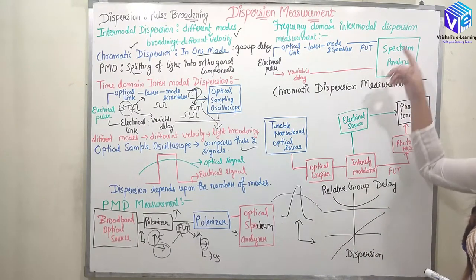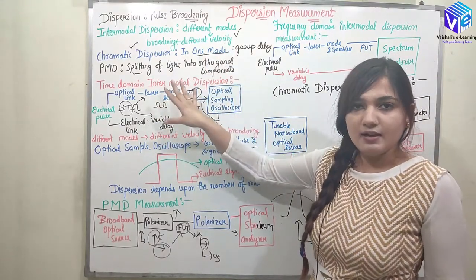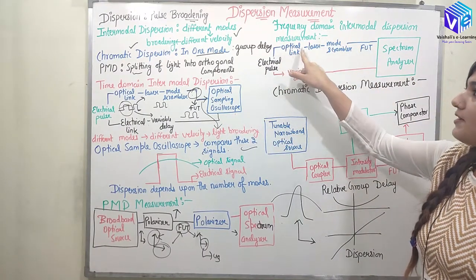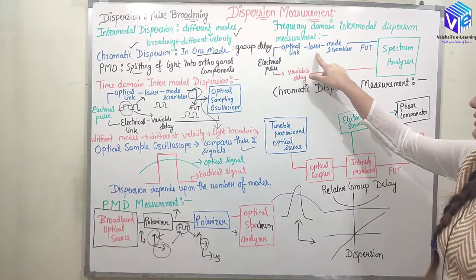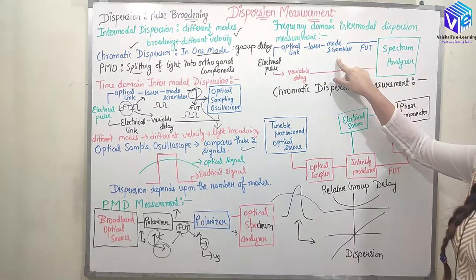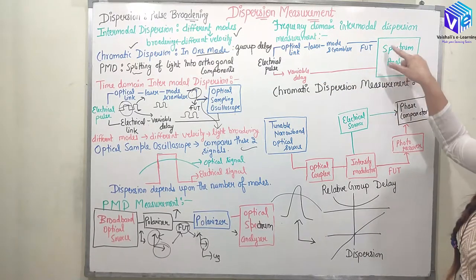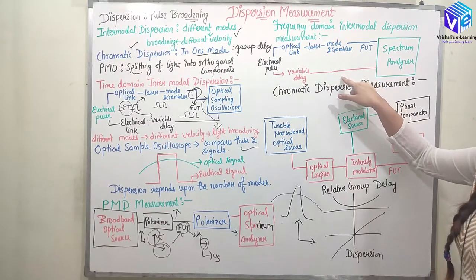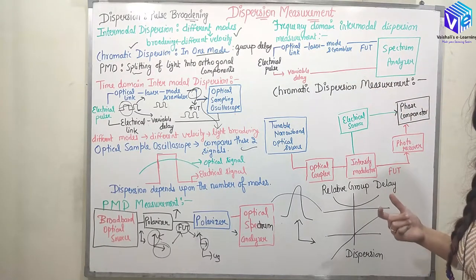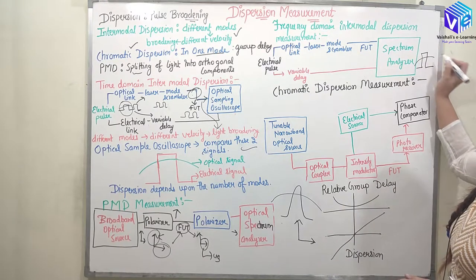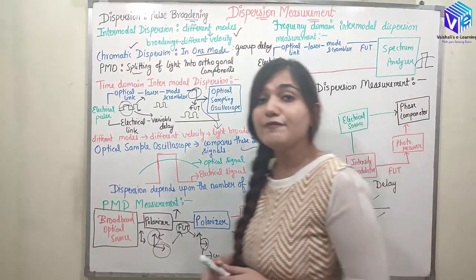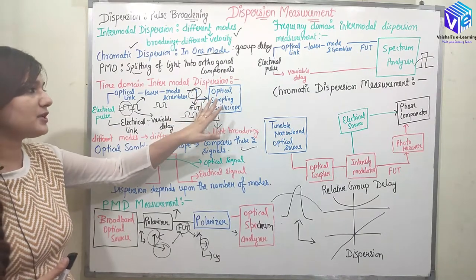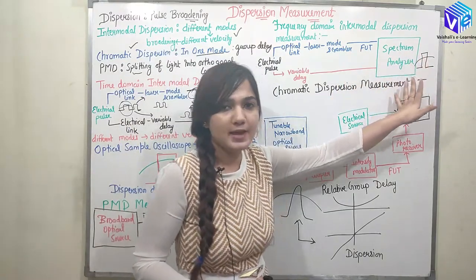Now coming to frequency domain intermodal dispersion measurement. In the frequency domain, again we have an electrical pulse, with optical and electrical links. In the optical link, I send the signal to the laser, then to the mode scrambler, then to the fiber under test, and then connect it to the optical input of a spectrum analyzer. The electrical pulse is sent through the variable delay and then to the spectrum analyzer. The spectrum analyzer shows the broadening in the frequency domain. It is the same principle as the time domain method, but here we use a spectrum analyzer instead of an optical sampling oscilloscope.